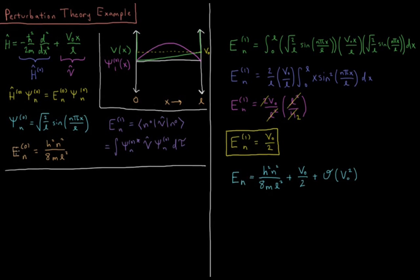And our reference energies E0 of these wave functions is equal to h² n² over 8mL², where L is the length of the box, h is Planck's constant, and m is the mass of the particle.